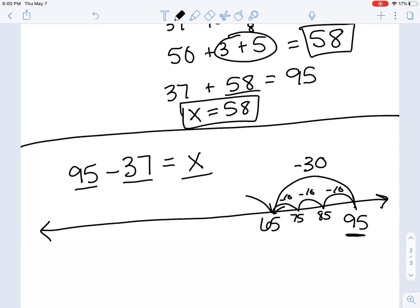Now I have 7 more to take away. So instead of just doing a jump of 7, because 65 minus 7 isn't really friendly, first I'm going to jump back 5 and get to 60. Then I'm going to jump back 2 more because 5 and 2 is 7. And now we can see, okay yes, I did take away 37 from 95.